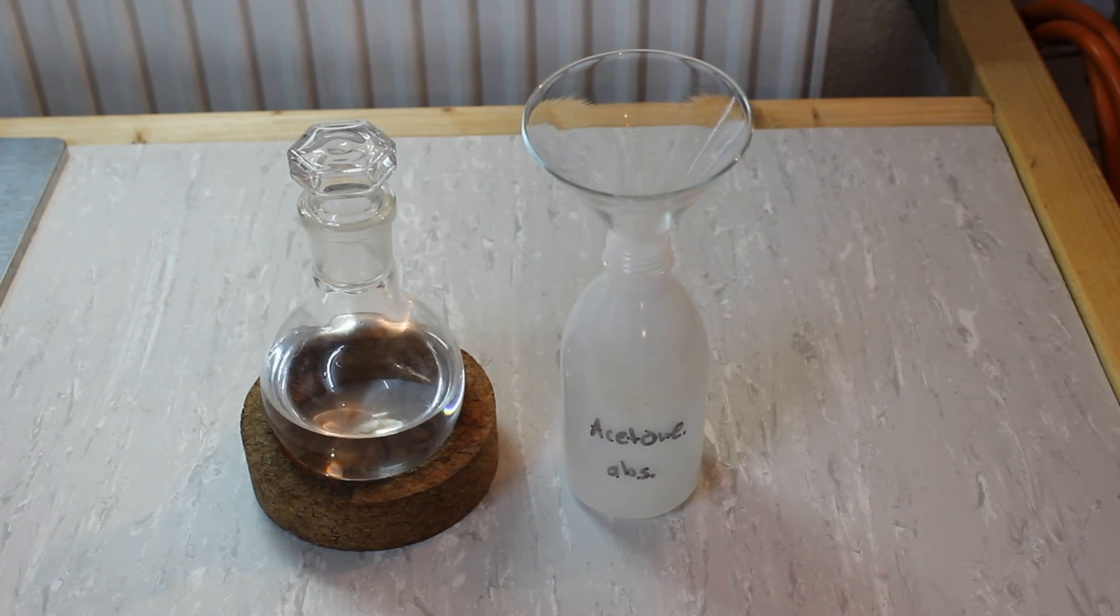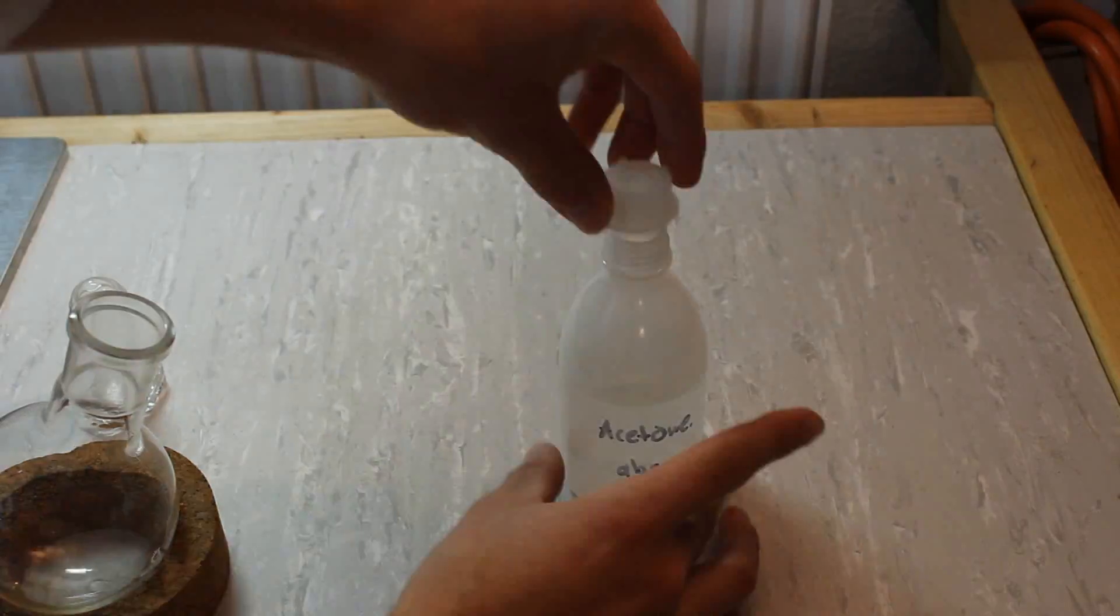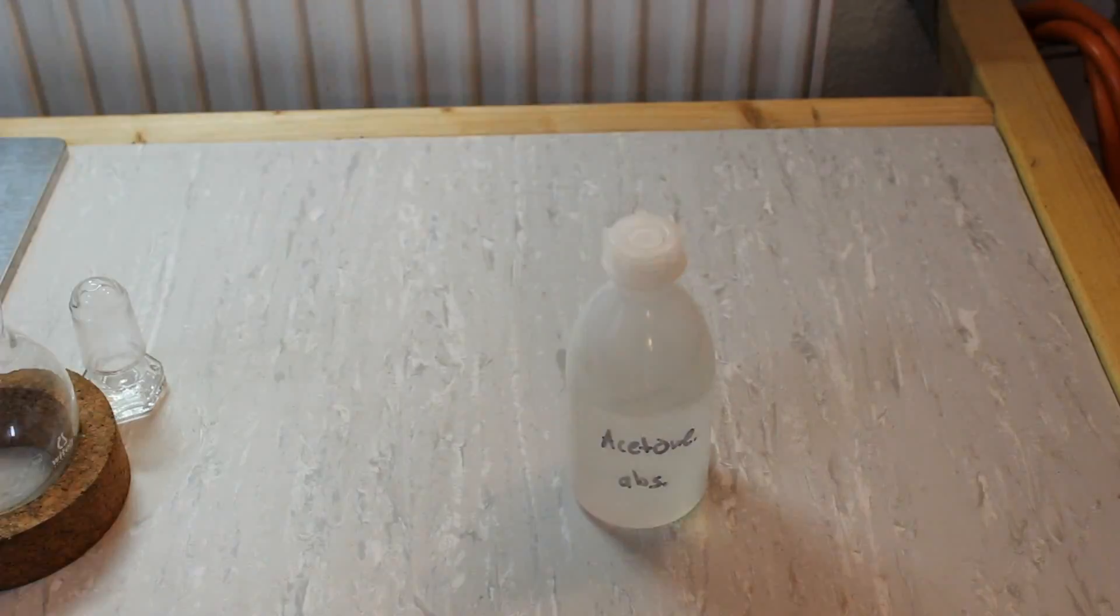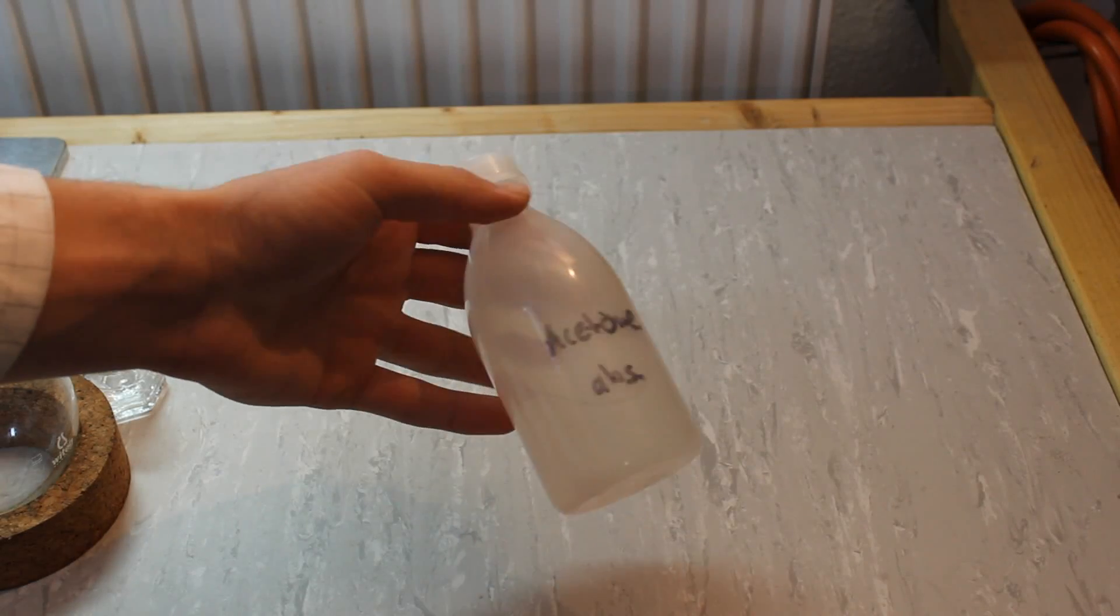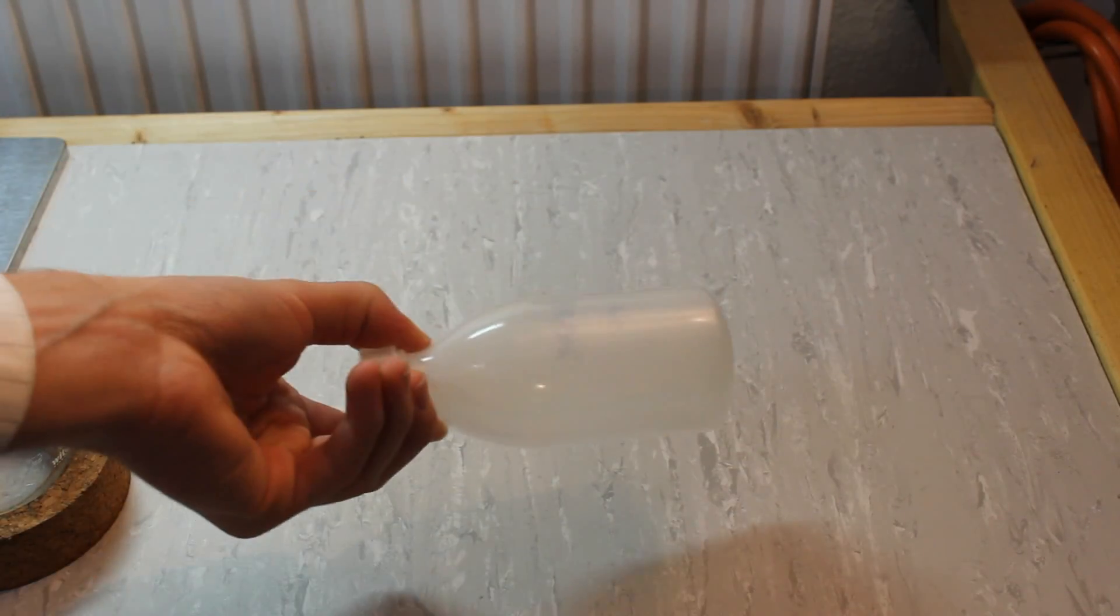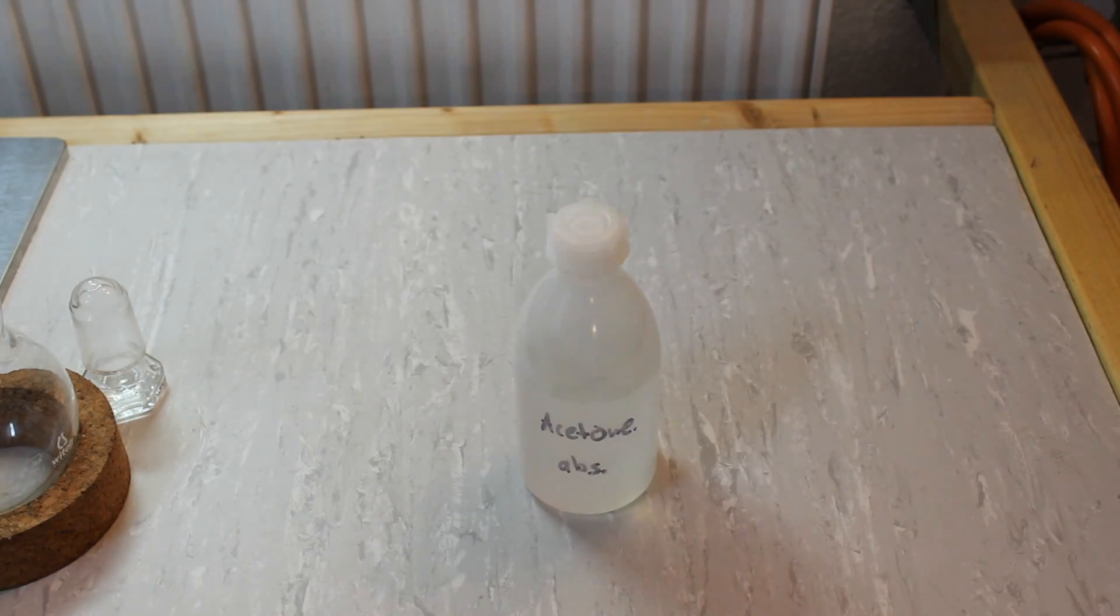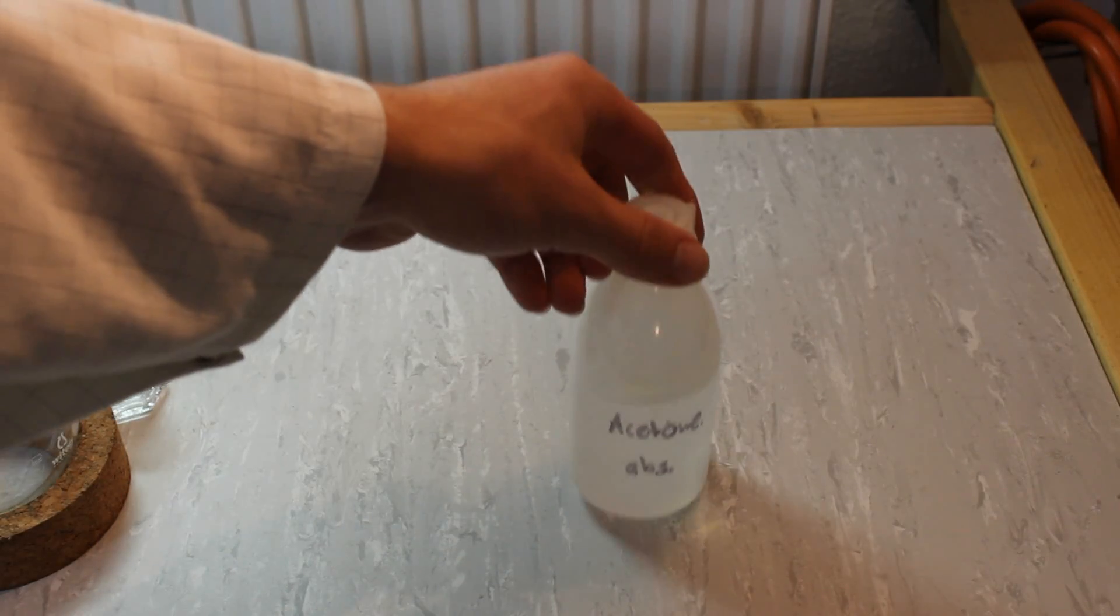Last but not least, I transferred the acetone into a proper storage bottle. So here we go, that's our final yield of dry acetone. I guess this is probably like 200 milliliters, so we did lose a little during the distillation steps, but therefore our product is pretty pure.